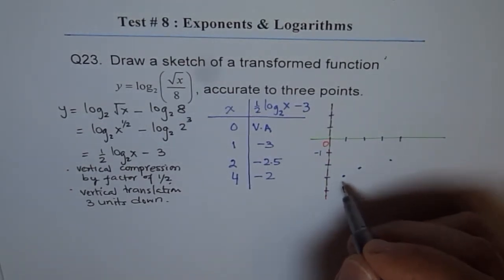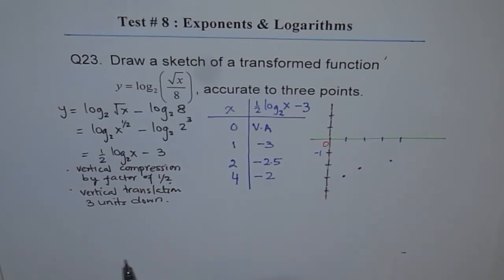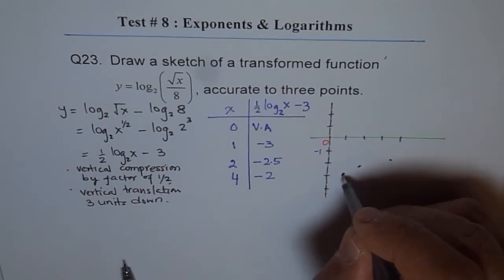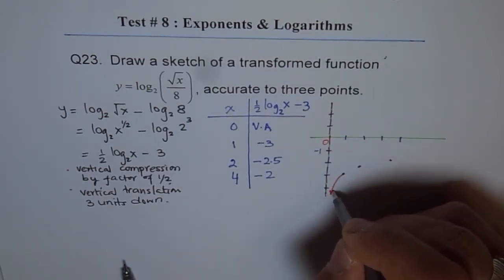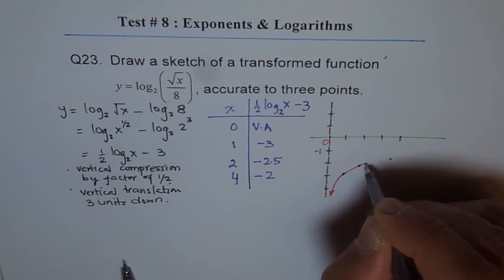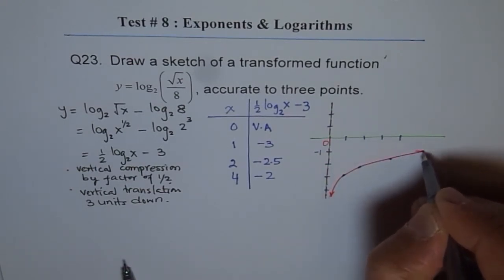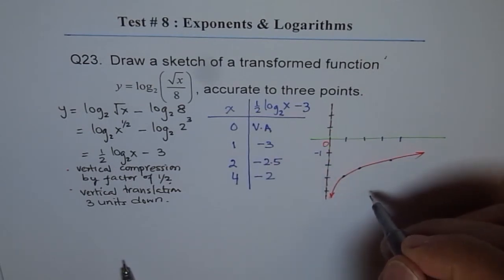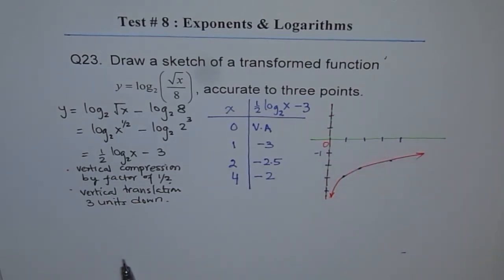Do you see that? So that is how our graph is moving. And we can connect these points to get a graph. So the graph will be kind of like this. That seems to be the vertical asymptote and kind of like this. So that is how our graph is going to look for this particular function. And these are the 3 points which give us the accuracy. So that is how this graph is going to look. Thank you.